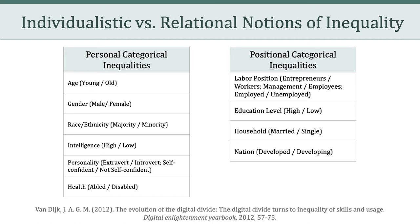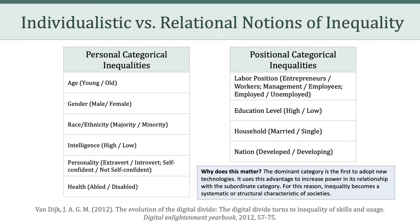From this perspective, the prime units of analysis are not individuals, but the positions of individuals and the relationships between them. In other words, inequality is a matter of individual attributes and categorical differences between groups of people. He argues that in each of these categories, the dominant category is the first to adopt new technologies, and it uses this advantage to increase power in its relationship with the subordinate category. For this reason, inequality becomes a systemic or structural characteristic of societies, and we can think about how this relates to different notions of the digital divide and to issues of fairness and inclusion when talking about equity in educational technology.